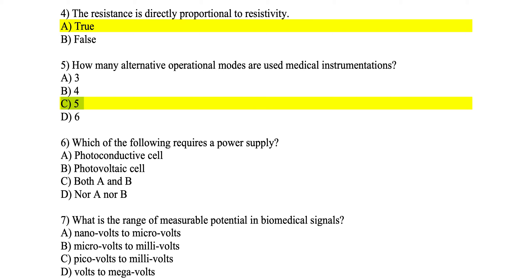Number 6: which of the following requires a power supply — a photoconductive cell, a photovoltaic cell, both A and B, or neither A nor B? The answer is A, the photoconductive cell. In the photoconductive cell, it is a modulated device, which means the measurement affects the power supplied to the photoconductive cell, and that is how we do the measurement.